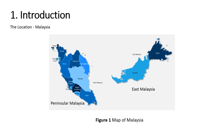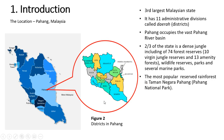Tembeling River is the main Pahang River tributary, located in Malaysia. As you can see from this map, Malaysia is divided into two sections: Peninsular Malaysia and East Malaysia. Pahang is located in Peninsular Malaysia and is among the largest states, being the third largest after Sarawak and Sabah. In Pahang, there are 11 administrative districts.